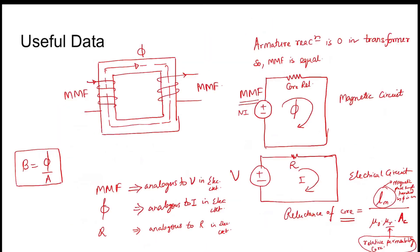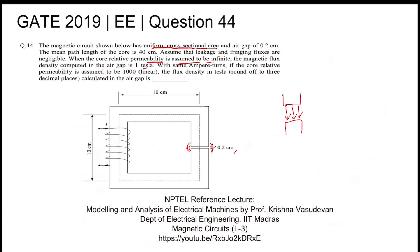So in the new case, when the permeability is 1000 and linear, the air gap flux density is 0.834 tesla. This is the answer. Thank you.